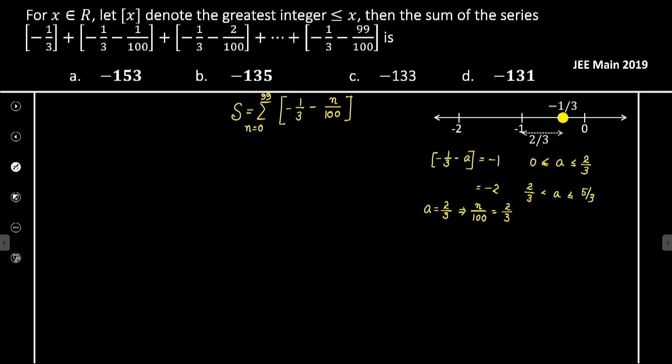And we consider that a equals 5 by 3, so if I consider that n by 100 equals 5 by 3...